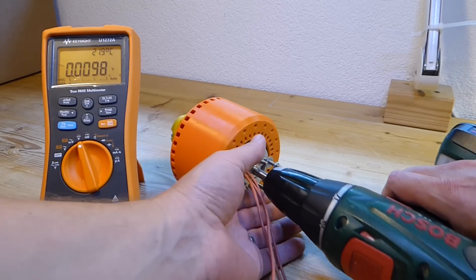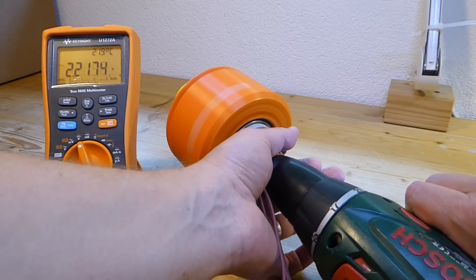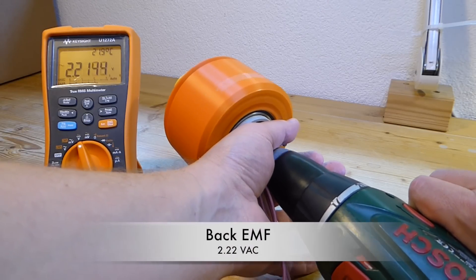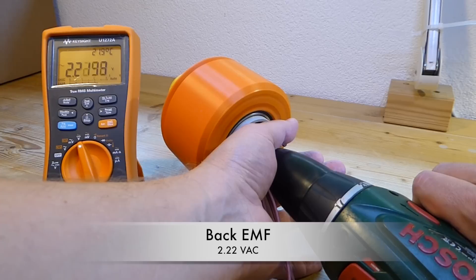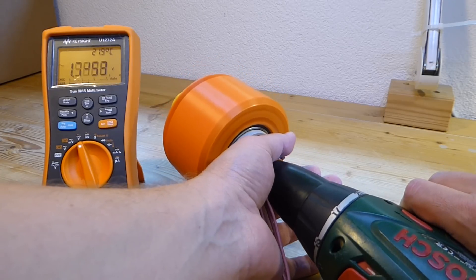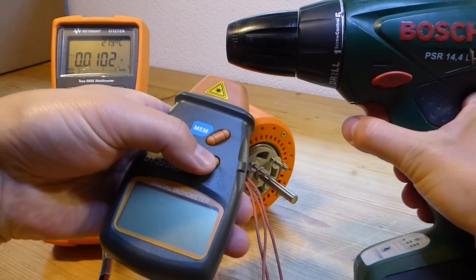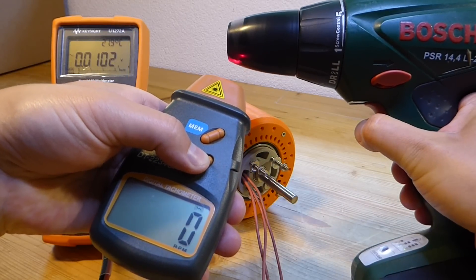Fix the shaft, let it spin as fast as possible and measure the AC voltage between 2 of the 3 leads at the motor. Also the rotation speed of the drill needs to be measured. Ideally the motor would need to be attached but I only have two hands.